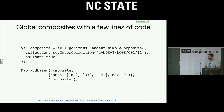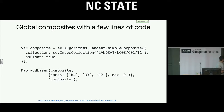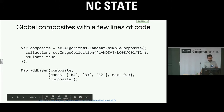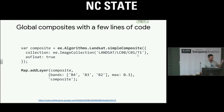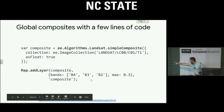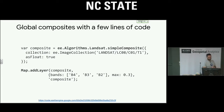Here's some code. This is getting a global cloud-free composite from Landsat 8. All you do is specify that you want a simple composite, here's the Landsat 8 data collection from the data catalog, set them as floats between 0 and 1, add it to the map, and that is it. Cloud-free Landsat composites — easy.